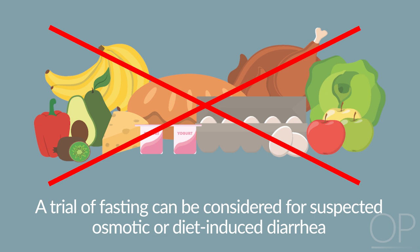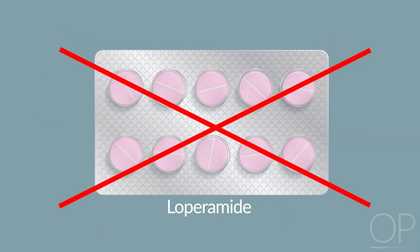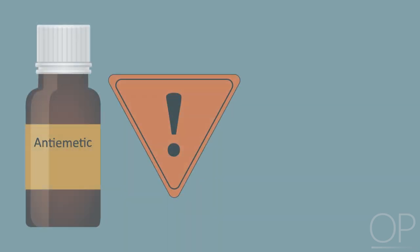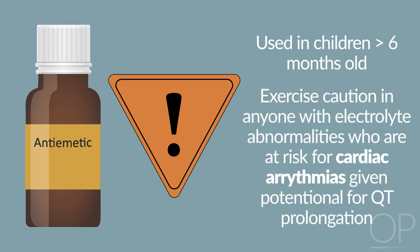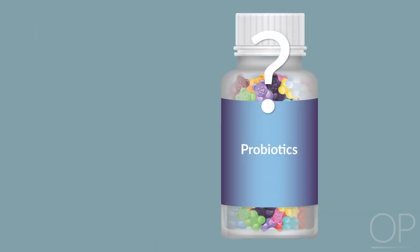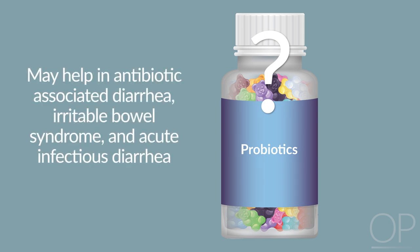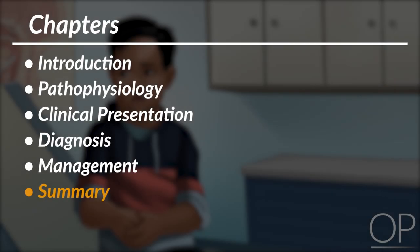Admission for rehydration should be considered for children with electrolyte abnormalities, lack of improvement with rehydration, inability to drink, or suspicion for systemic illnesses such as hemolytic uremic syndrome. A trial of fasting can be considered for suspected osmotic or diet-induced diarrhea, but otherwise a normal diet should be resumed as soon as tolerable. Anti-motility agents such as loperamide are not recommended in children. Antiemetics such as ondansetron can be used in children older than 6 months with nausea and vomiting, but should be used cautiously in anyone with electrolyte abnormalities or at risk for cardiac arrhythmias given the potential for QT prolongation. The effectiveness of probiotics is controversial, but there is evidence that certain commensal species may help in antibiotic-associated diarrhea, IBS, or acute infectious diarrhea.